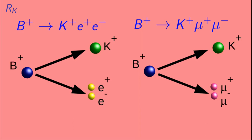These decays involve both quarks and leptons, so we could ask questions about quark or lepton flavor in these observables. But for Rk, what we're mostly interested in is the lepton flavor. LHCb looks at these two decays where a B+ goes to a K+ and either an e+e- pair or a mu+mu- pair.